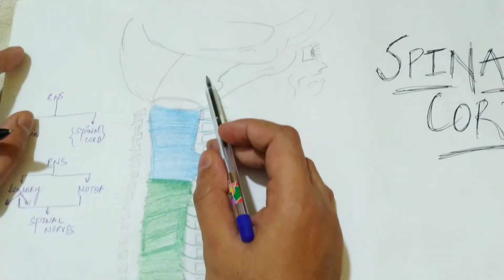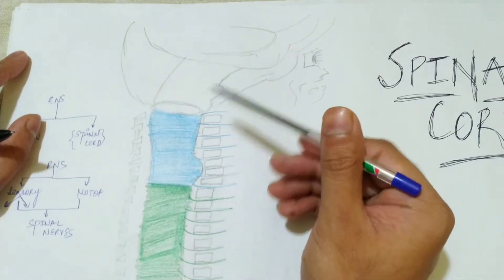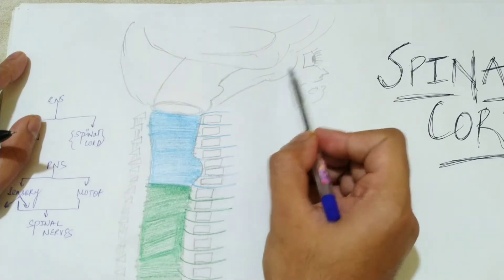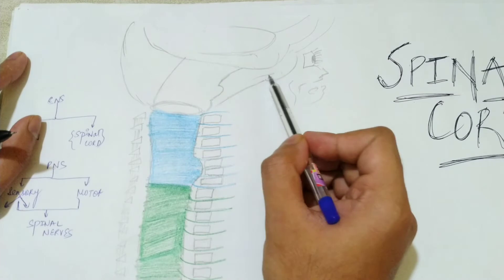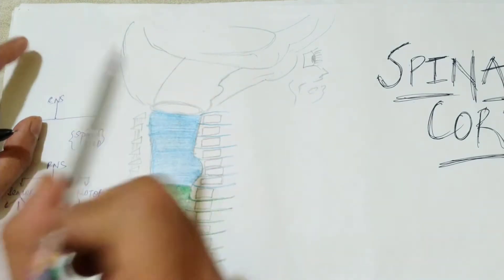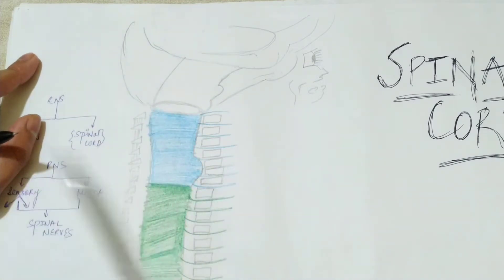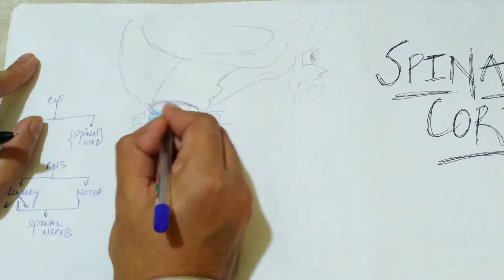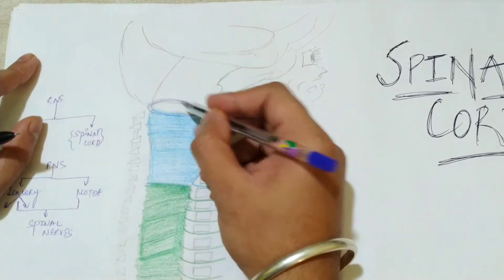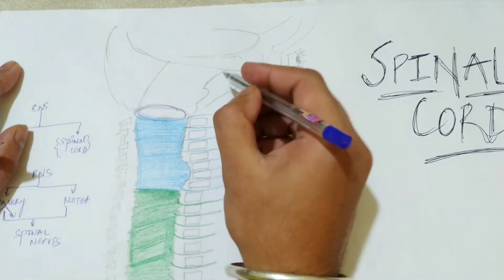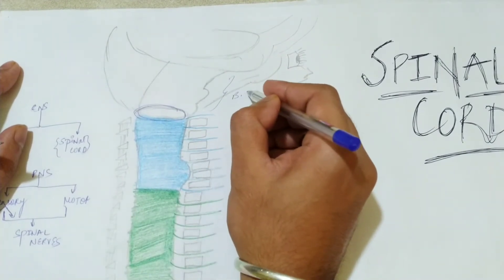The brain has three regions: the upper part is the anterior cranial fossa, then the middle cranial fossa, and the largest is the posterior cranial fossa. The spinal cord originates from the posterior cranial fossa, specifically through a large hole called the foramen magnum. The spinal cord exits from this hole from the brain, and this is your brainstem.